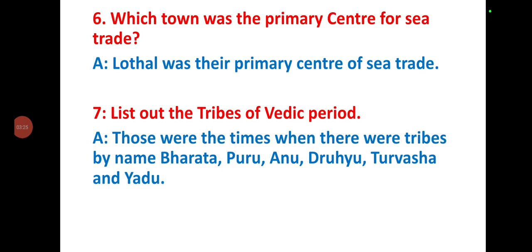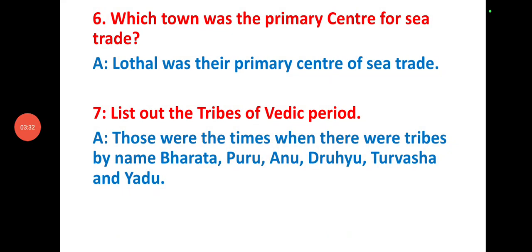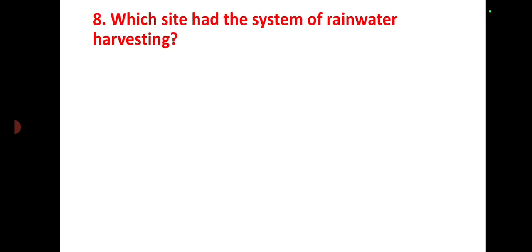Question number seven: list out the tribes of the Vedic period. In those times there were tribes by the names Bharata, Puru, Anu, Druhyu, Turvasha, and Yadu.